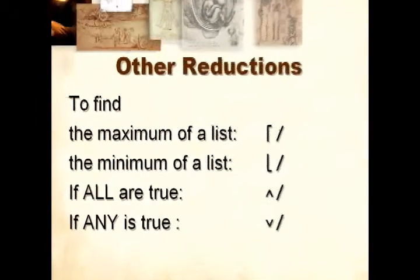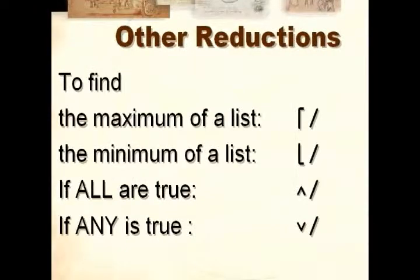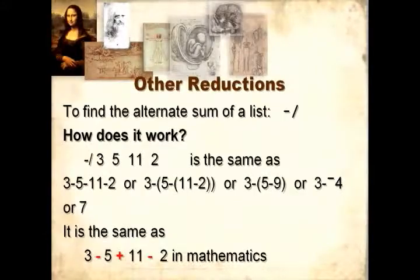So to find the maximum of a list, we use maximum slash. To find the minimum, we use minimum slash. To find out if everything is true, we use and slash. To find if any is true, we use or slash. To find the alternate sum of a list, we use minus slash.